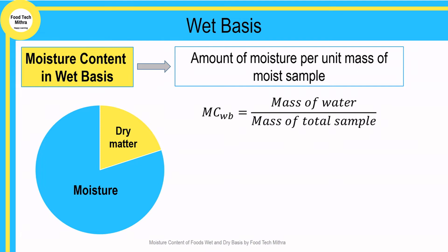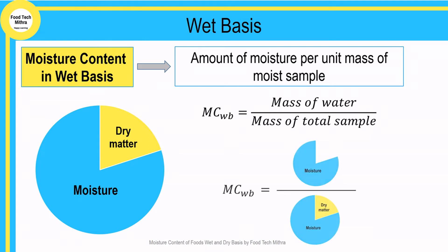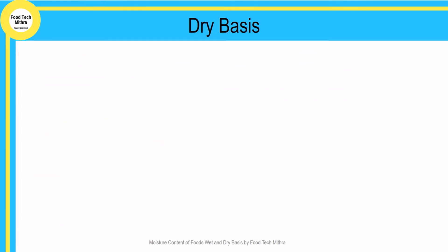The terms dry matter, solid contents, or bone dry matter are all the same. The calculation of moisture content on a wet basis is given as the mass of the moisture portion divided by the mass of the whole portion — that is, the mass of the moisture portion plus the dry matter portion.